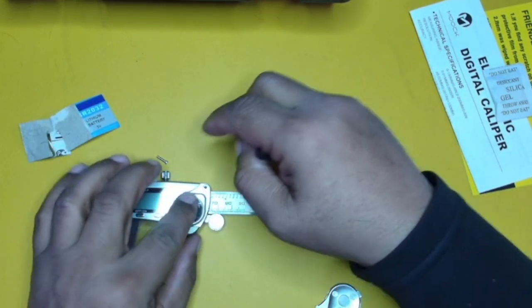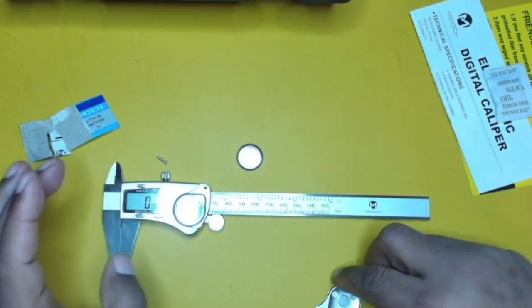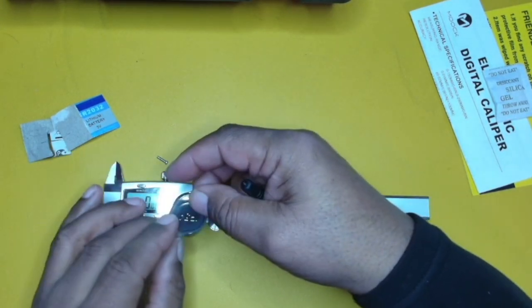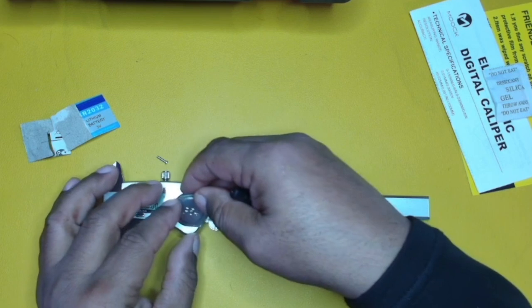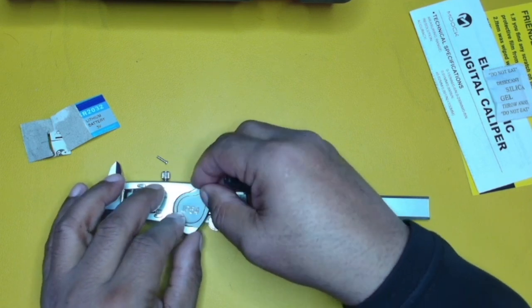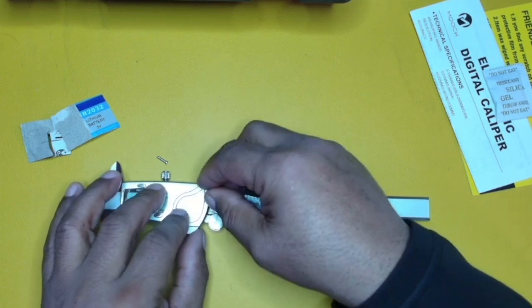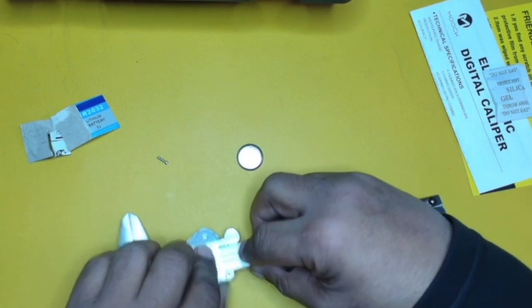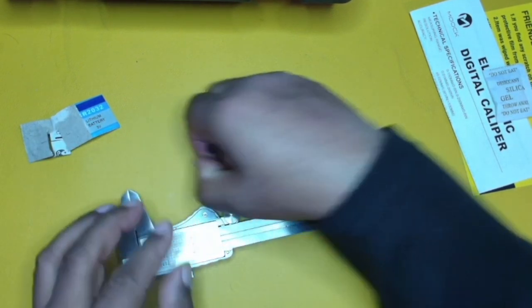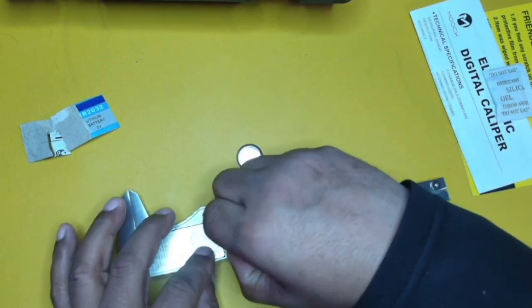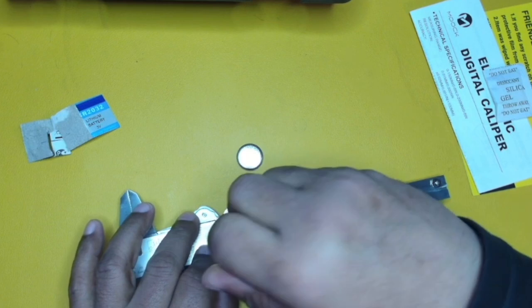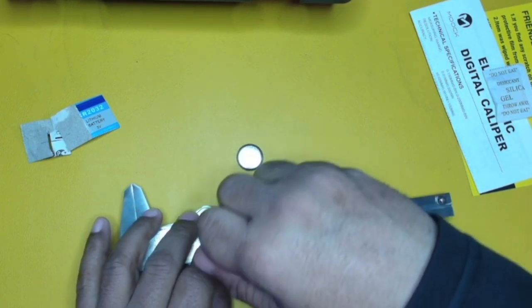All right, so here's the second battery. And that battery came on. So that means the battery that was in here was dead. Interesting. So let's put this back together. We can take our one screw, put that back in, and let me tighten it down.